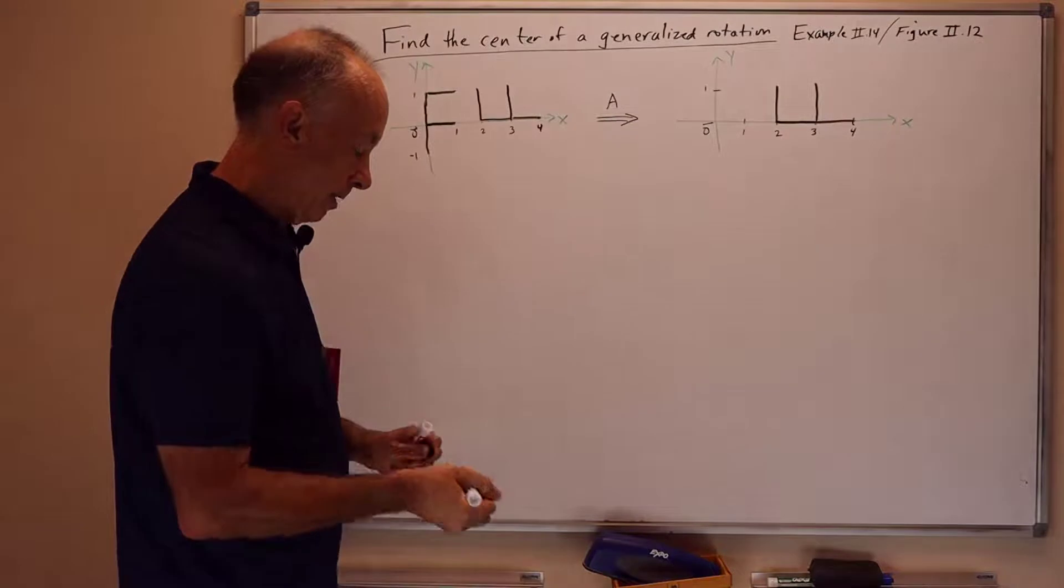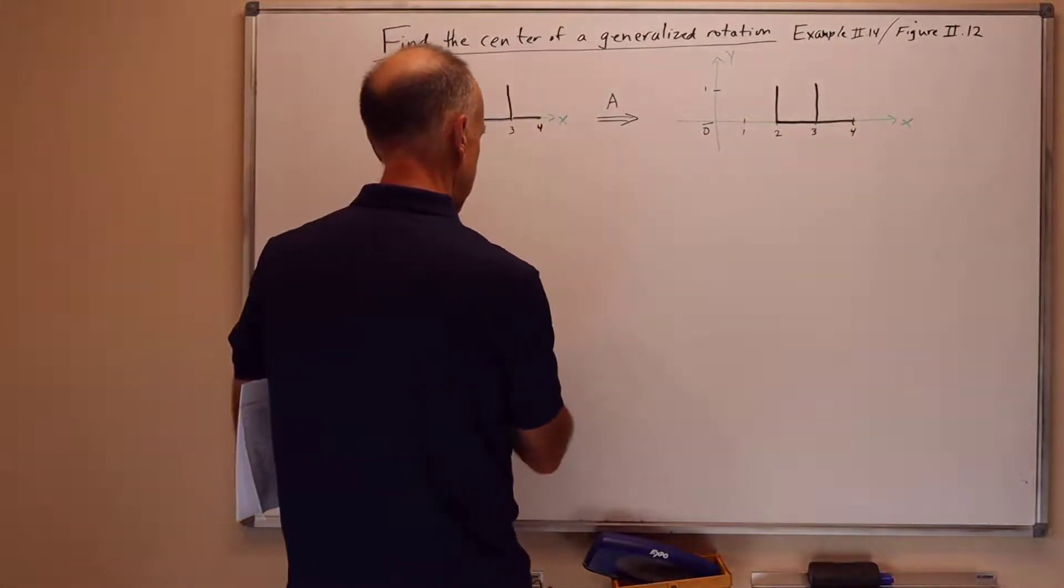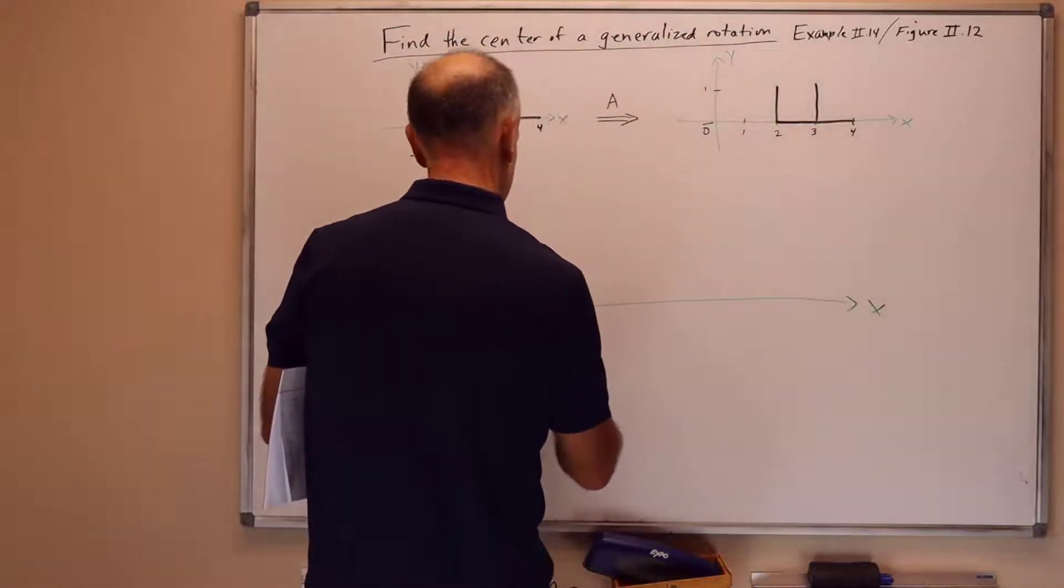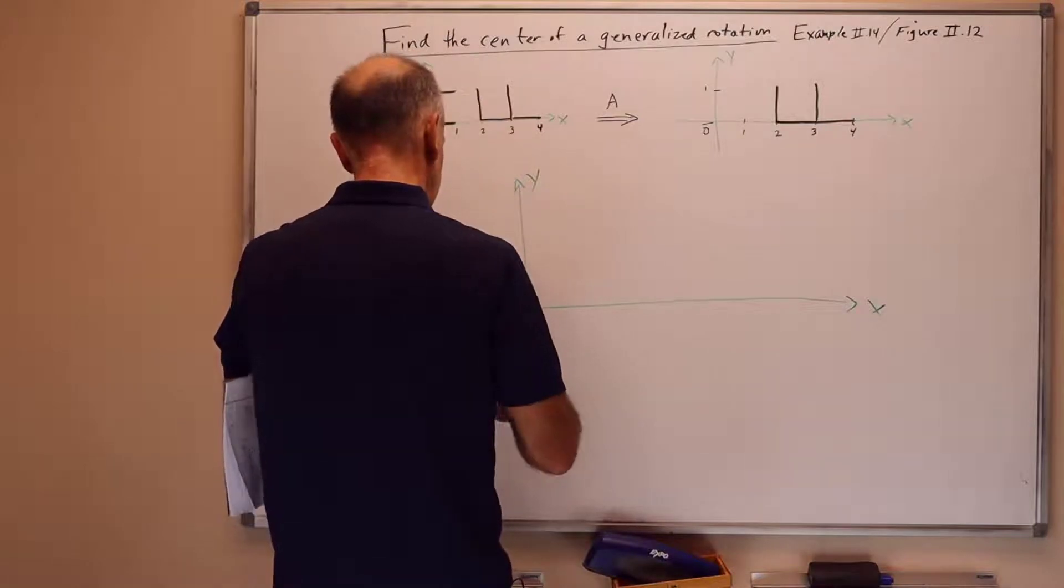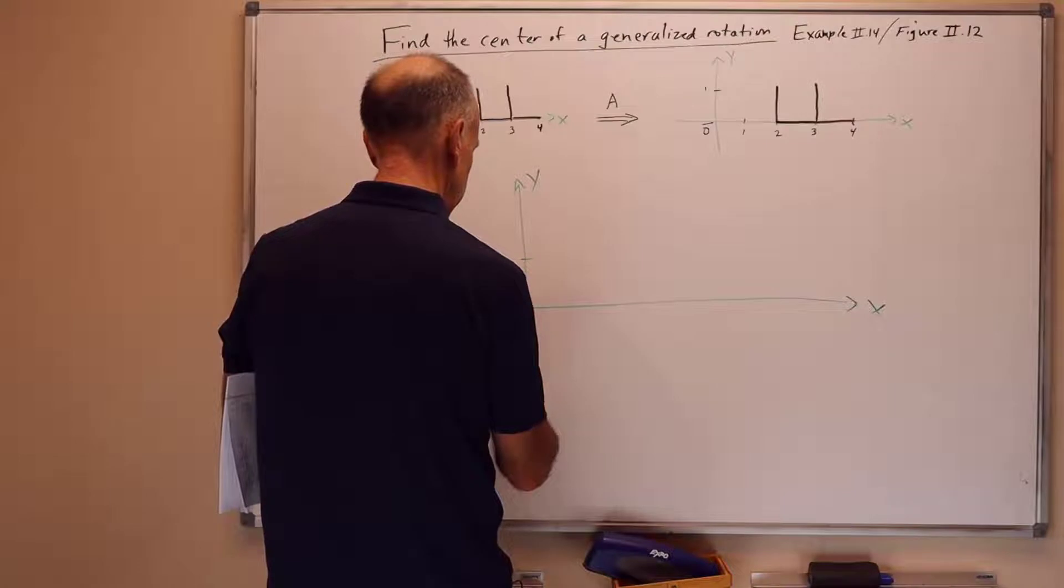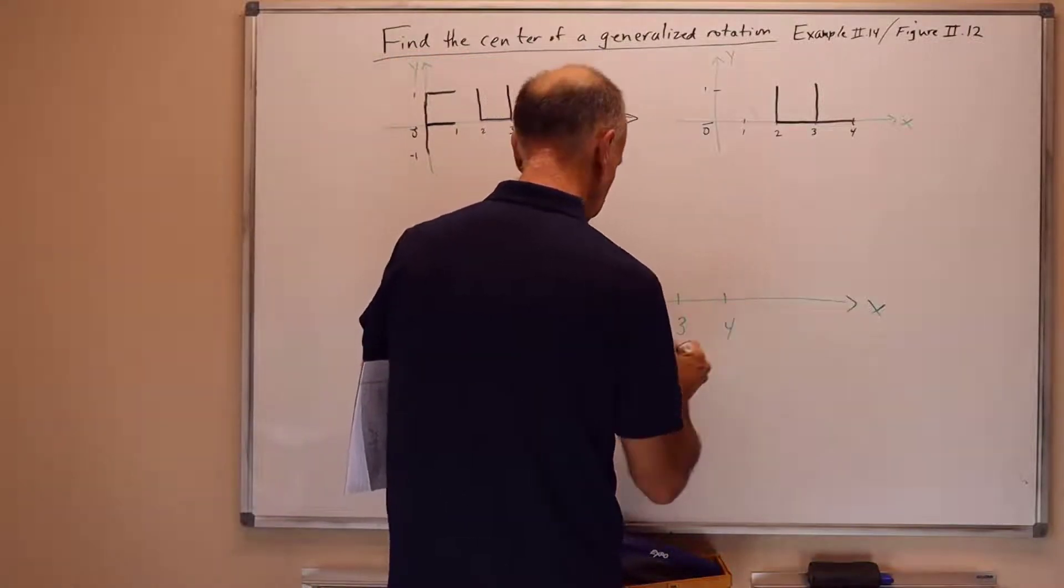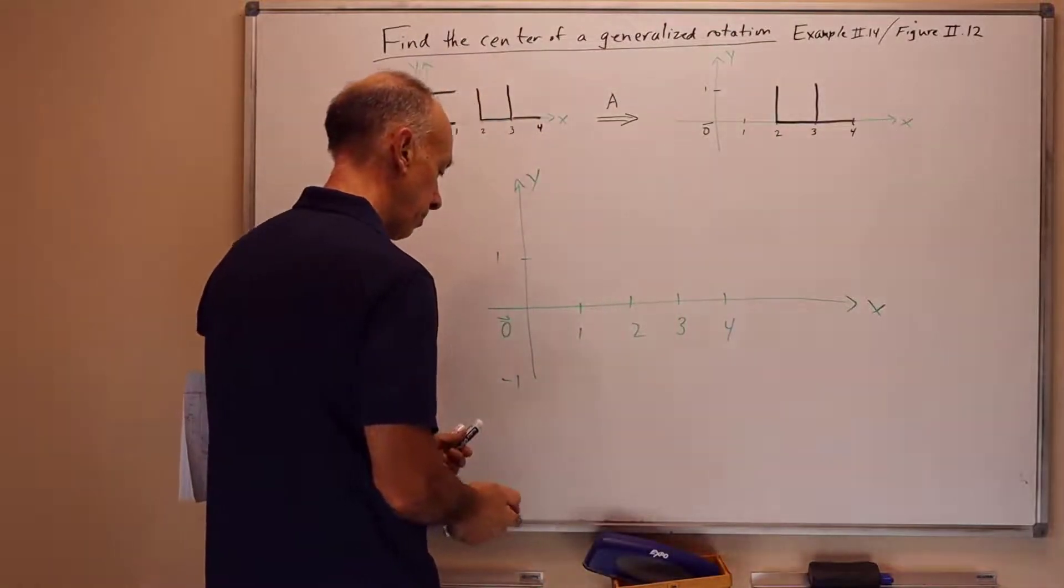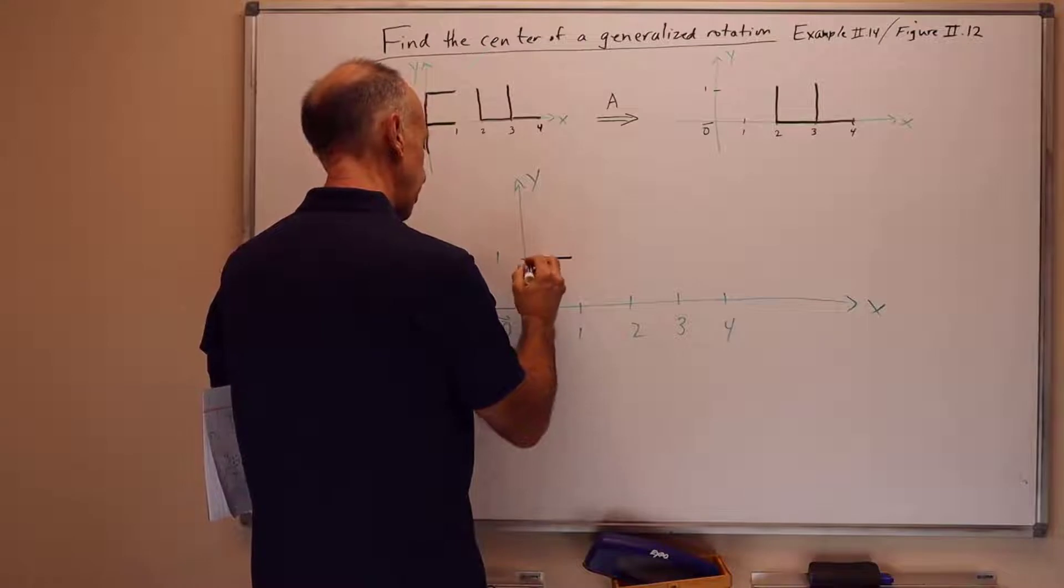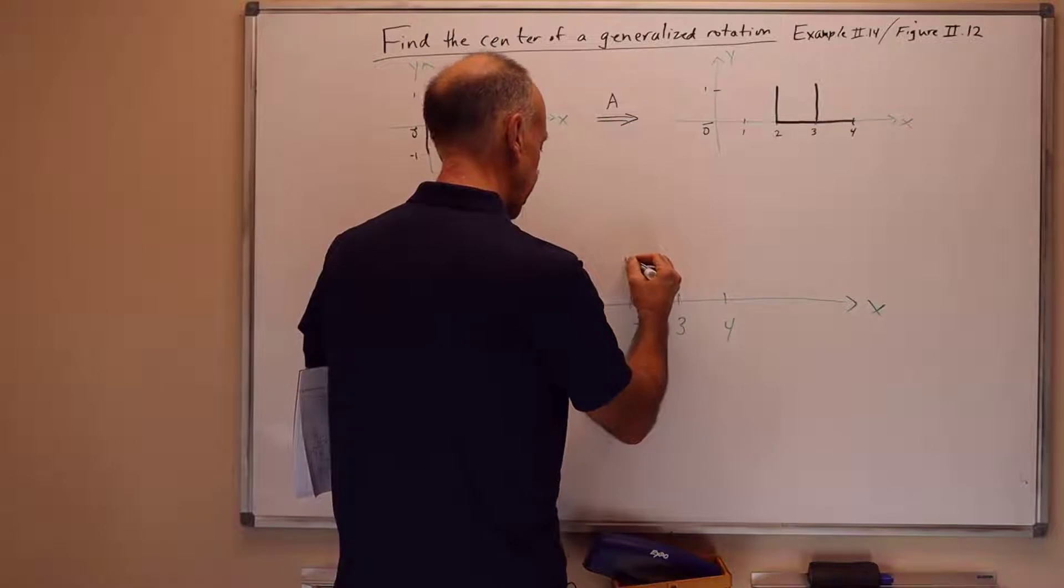So let me redraw this figure a bit bigger with the two f's on top of each other. So here's the x-axis, the y-axis, 1, 0, minus 1, 1, 2, 3, 4. And I've got the first f, the original f in the domain in standard position. Second f is here.